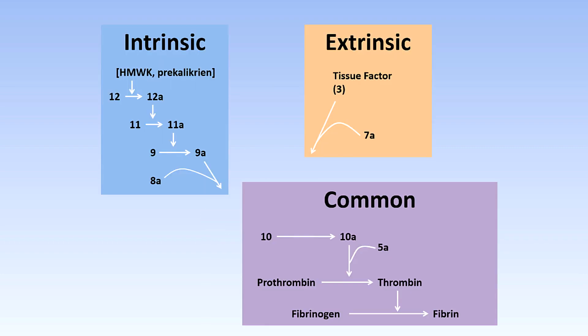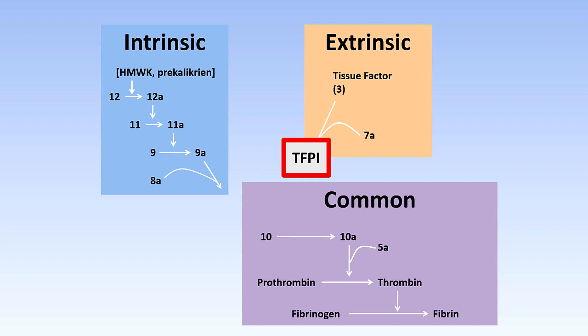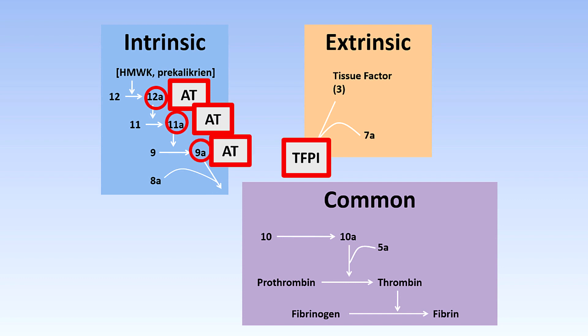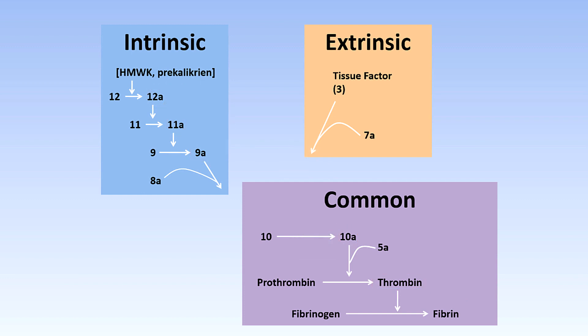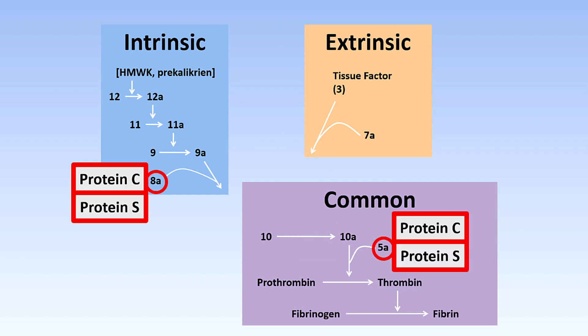This is a picture of the traditional model of coagulation — the extrinsic and intrinsic systems. Tissue factor pathway inhibitor limits the initial burst of thrombin produced through the extrinsic or tissue factor pathway. Antithrombin, sometimes called antithrombin 3, limits part of the amplification phase, or the intrinsic and common pathways. Finally, the complex of protein C and protein S inhibits all of the cofactors of coagulation.